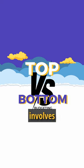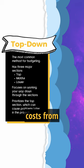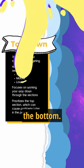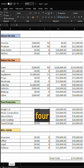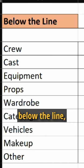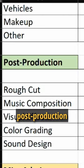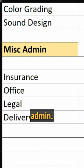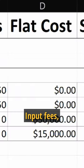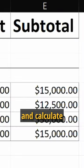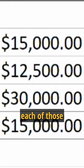Top-down budgeting involves summing up all your costs from top to bottom, that way you get your final cost at the bottom. A film budget typically consists of four sections: above the line, below the line, post-production, and miscellaneous admin. Input fees, daily rates, and calculate subtotals for each of those categories.